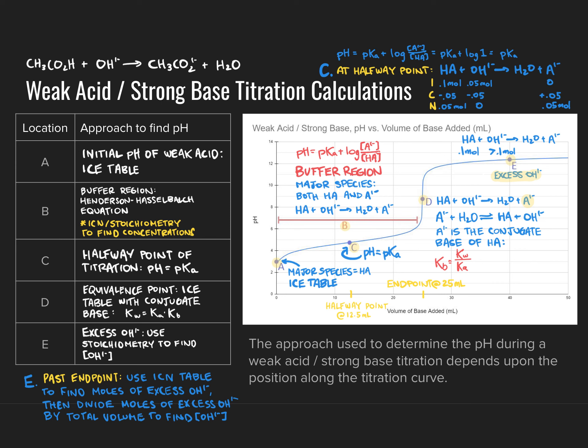In summary, we can mathematically generate the entire shape of a pH curve if we know the initial acid concentration and its Ka value, plus the amount of OH⁻ added at any given point. There are five different approaches for solving pH depending on where we are along the titration curve. You'll get practice with these in the titration lab and homework problems. That covers the shape of titration curves — thank you for listening, and we'll see you at the next lecture.